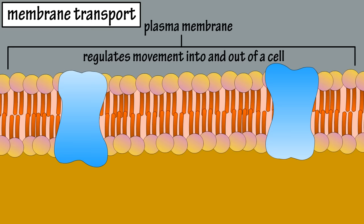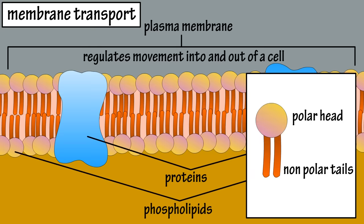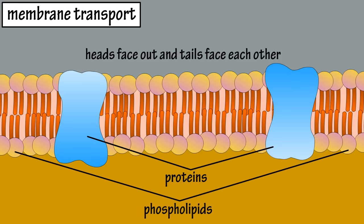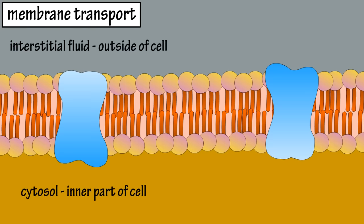The membrane is comprised mainly of phospholipid molecules and has protein molecules scattered throughout its structure. The phospholipid molecules have a polar hydrophilic water-loving head and two non-polar hydrophobic water-fearing tails. The membrane is formed as the heads face out and the tails face in, forming a bilayer, as you can see here. The inner part of the cell is called the cytosol, and the outside of the cell is surrounded by a fluid called interstitial fluid.